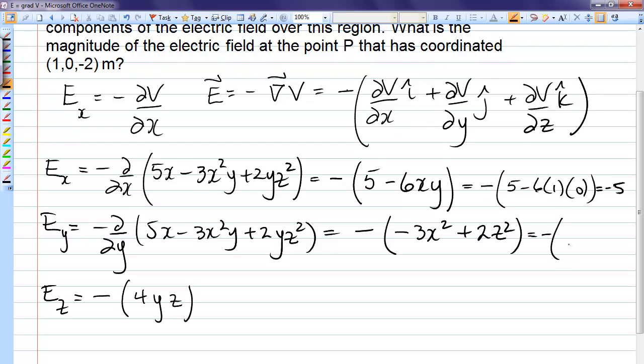Similarly here, for x we substitute in 1. And for z, we substitute in negative 2. Negative 2 squared is 4 times 2 is 8. So the y component is also negative 5, and the z component is 0.